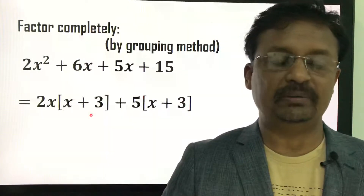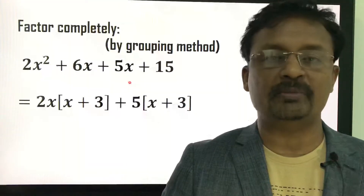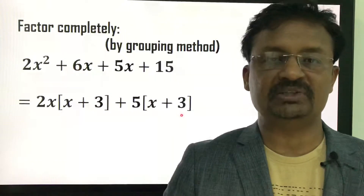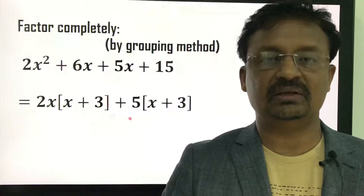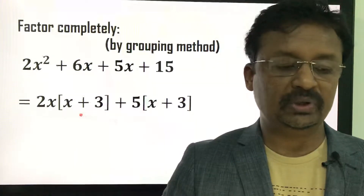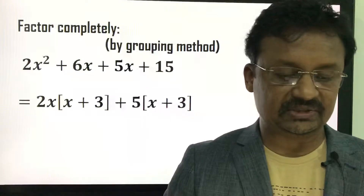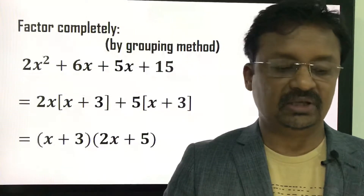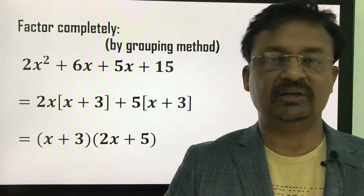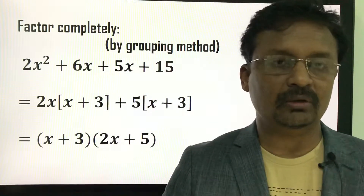After taking out 2x, the remaining is (x + 3). From the third and fourth terms, I take 5 as a common factor, and the remaining is also (x + 3). So the expression becomes 2x(x + 3) + 5(x + 3). From these two terms, I can take (x + 3) as a common factor, giving (x + 3)(2x + 5). This is how we factorize using the grouping method when three or more terms are given.